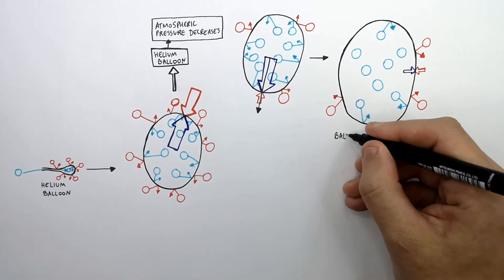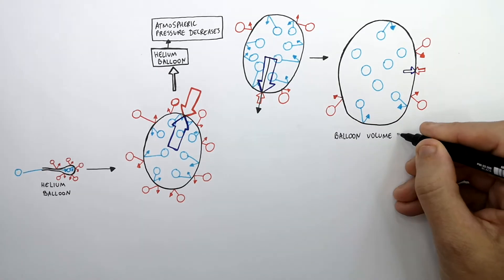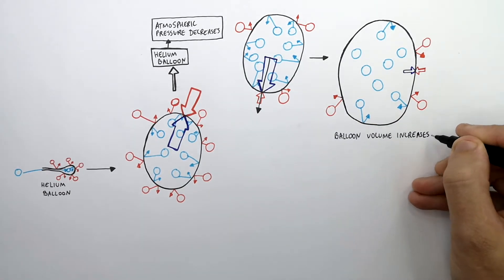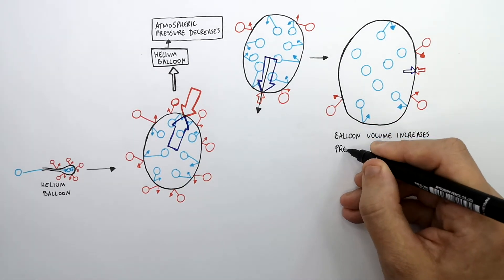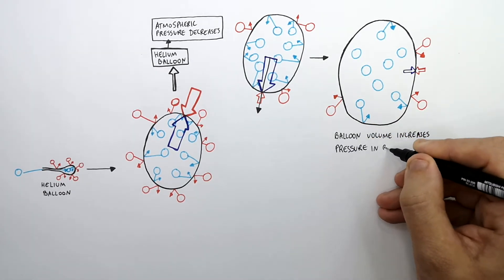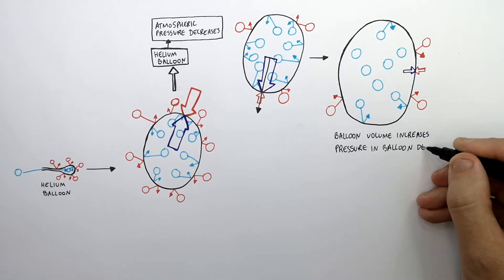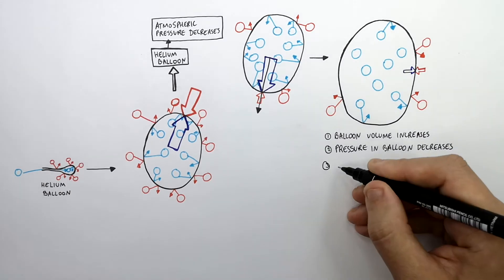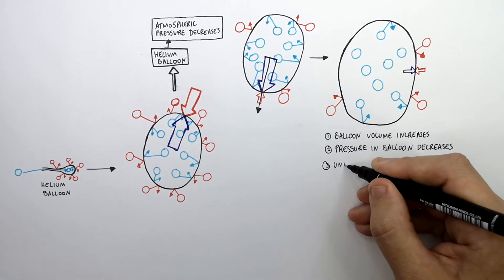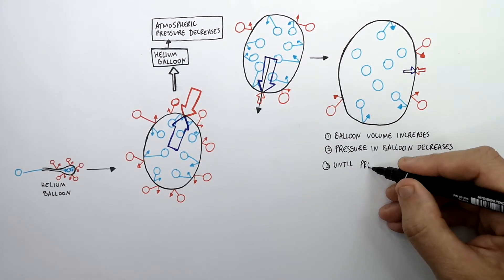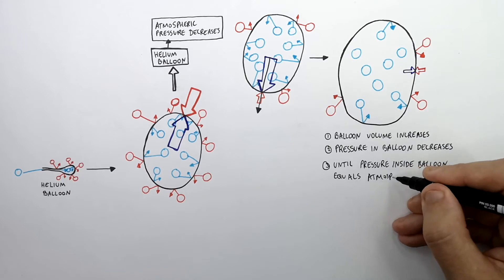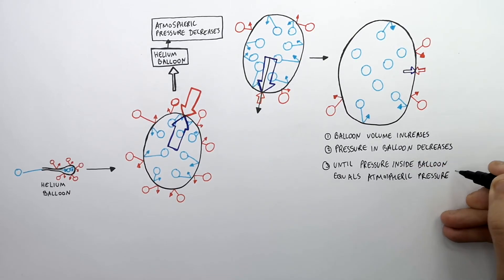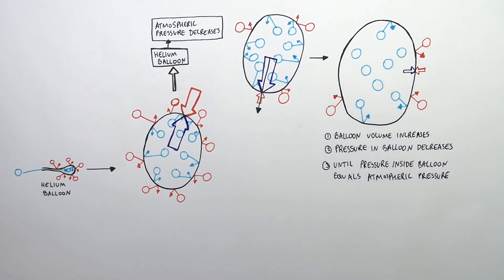The balloon's volume increases. This is because the pressure inside the balloon decreases until the pressure inside the balloon equals the atmospheric pressure outside of the balloon.